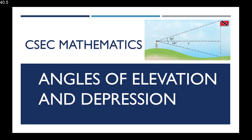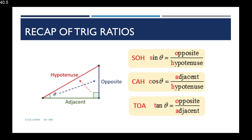This video tutorial deals with angles of elevation and depression. To recap from our last tutorial, we looked at the trig ratios. For a right angle triangle we have three trig ratios: sine theta equals opposite over hypotenuse, cos theta equals adjacent over hypotenuse, and tan theta equals opposite over adjacent.